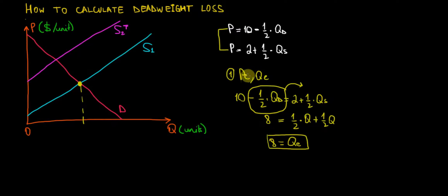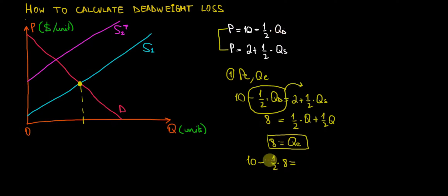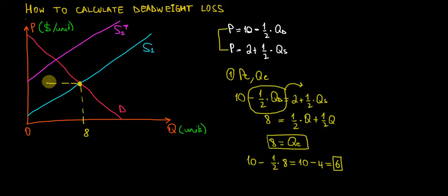The other piece is the equilibrium price. To calculate it, I substitute the equilibrium quantity into the demand function: 10 minus 1/2 times 8 equals 10 minus 4 equals 6. So $6 per unit is the price equilibrium on the market. In other words, the equilibrium values are 8 on the quantity axis and $6 per unit on the price axis.